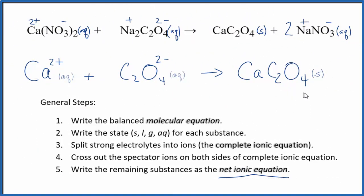So this is the net ionic equation for Ca(NO3)2 plus Na2C2O4, calcium nitrate plus sodium oxalate. And this is Dr. B.